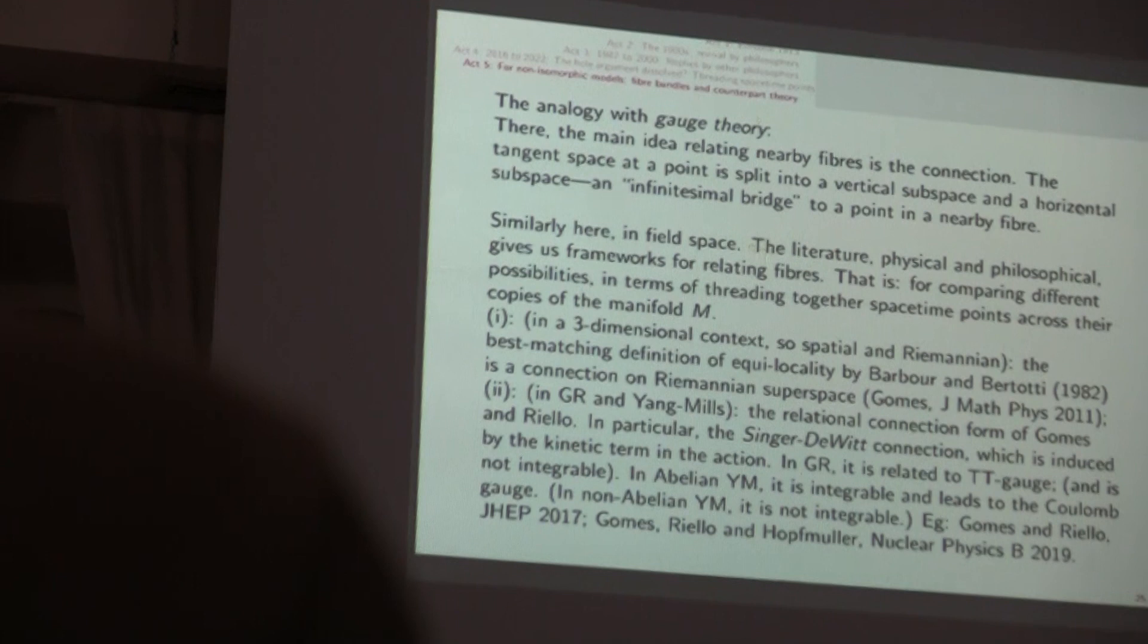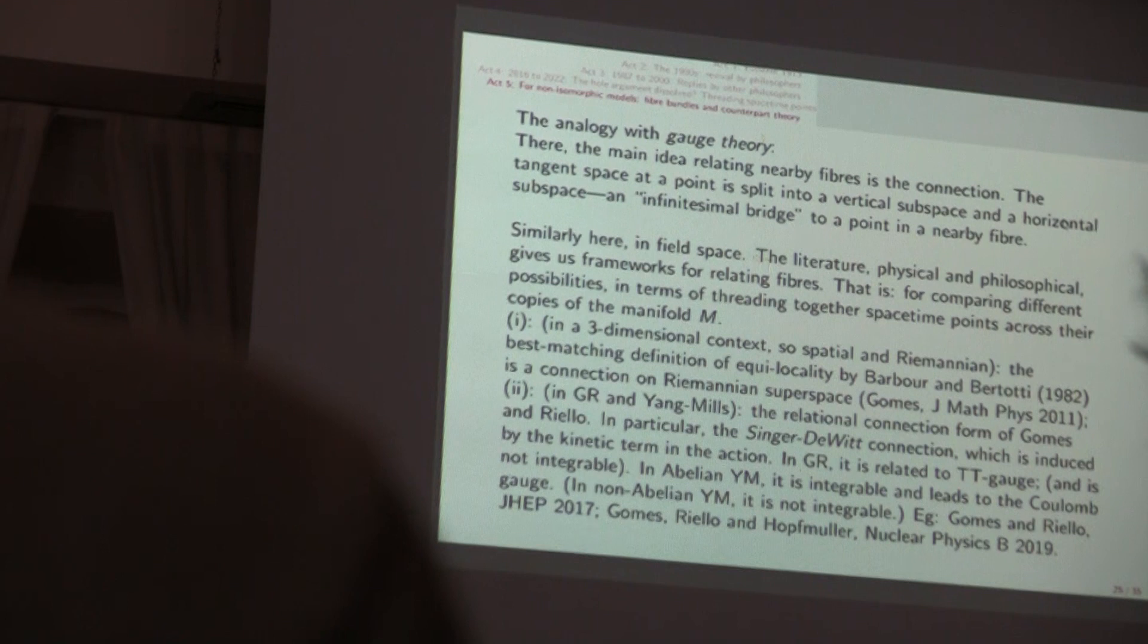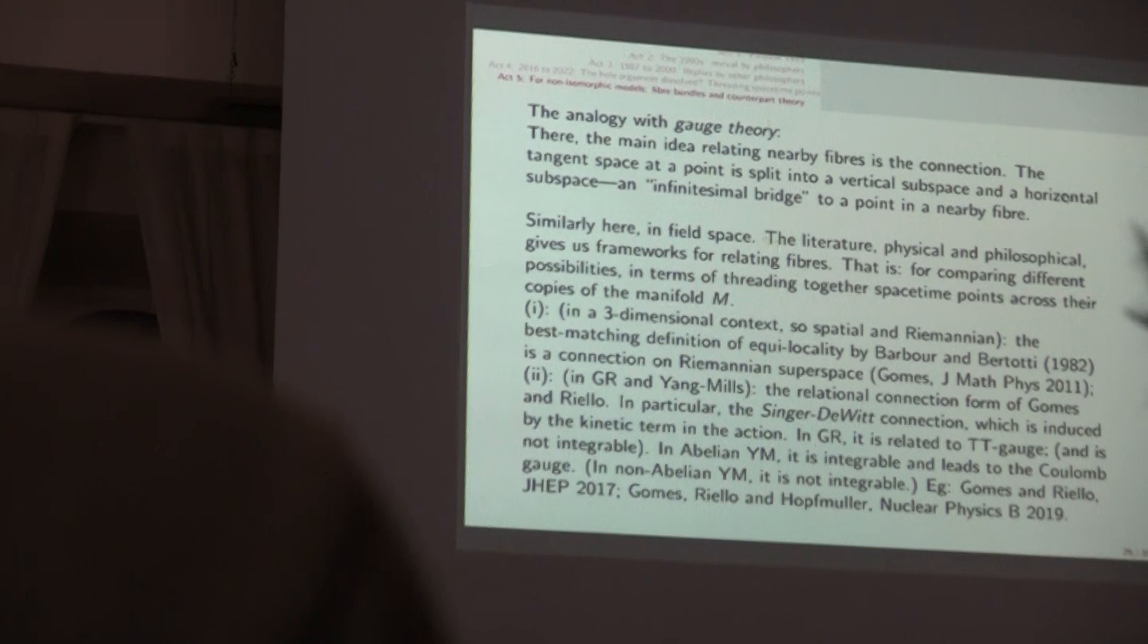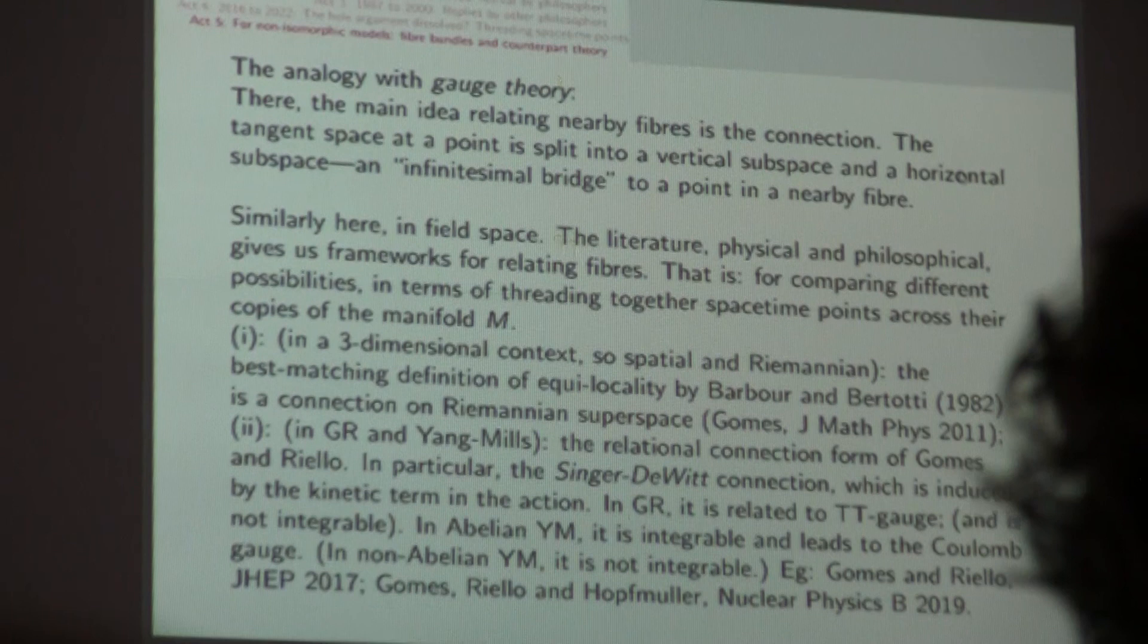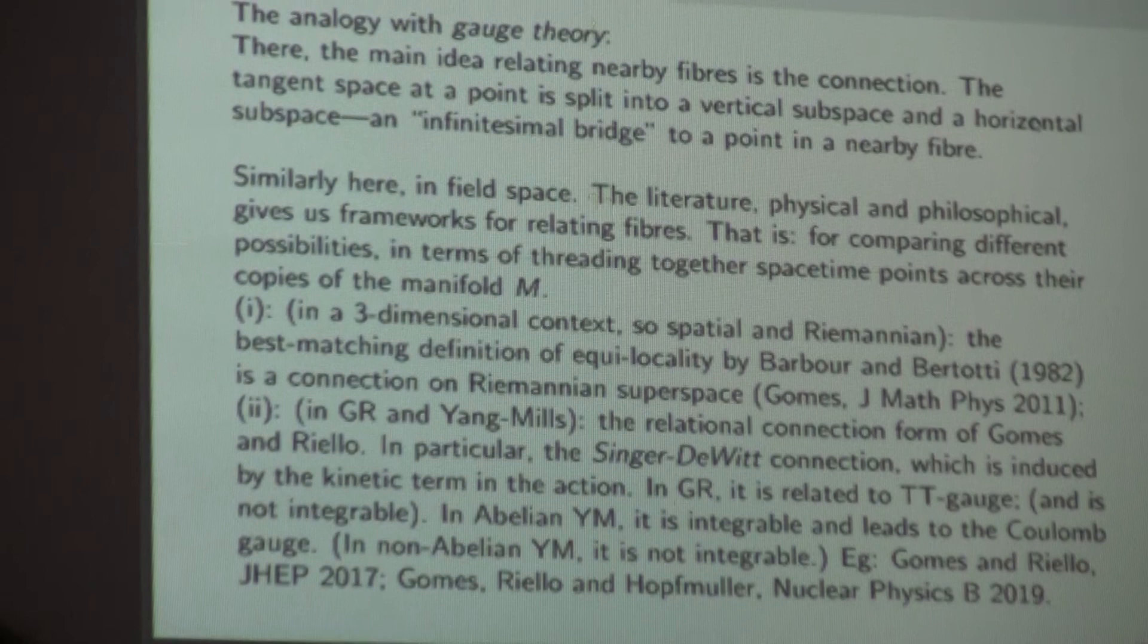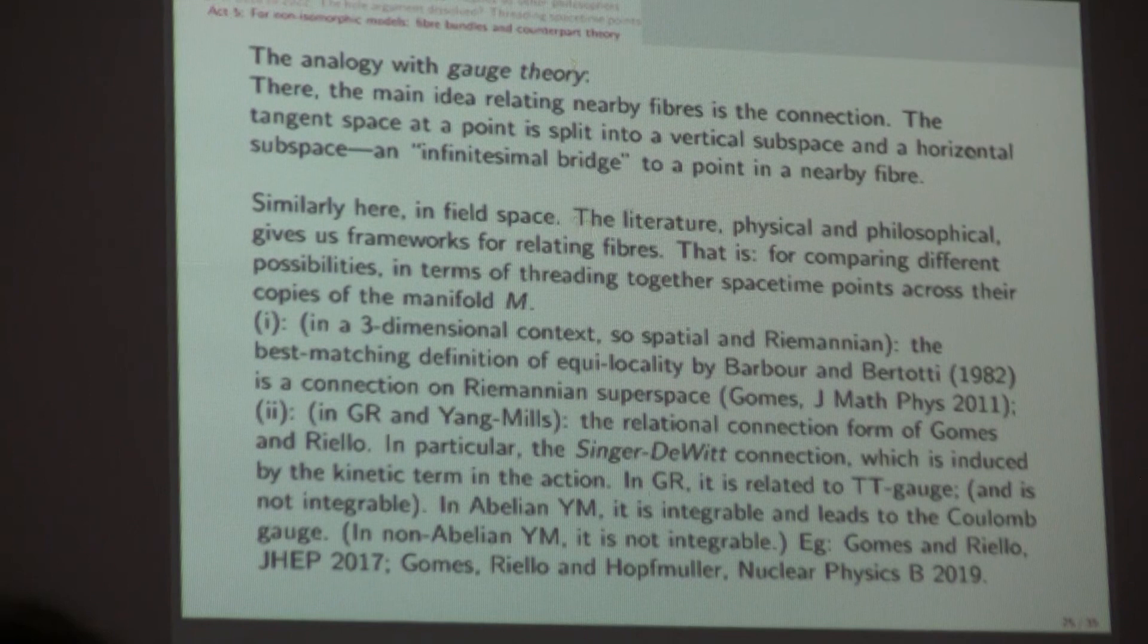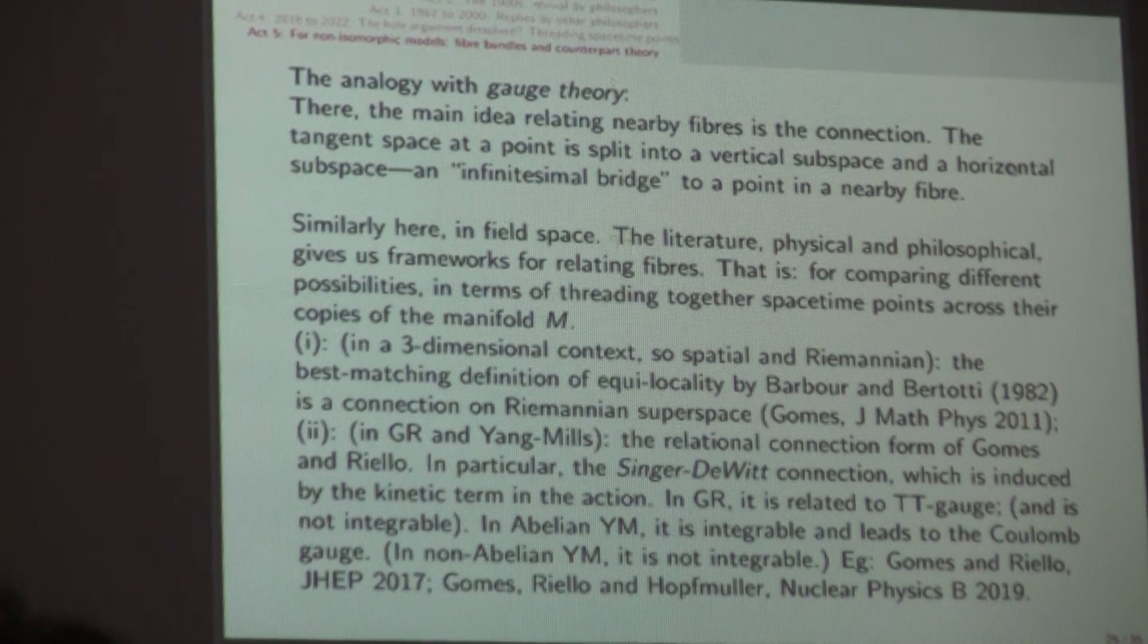So we're going to have a framework for comparing different possibilities, which will involve threading spacetime points across the copies of the manifold M in the two elements of the fiber. Now, in a three-dimensional context, for spatial geometries and Riemannian metrics, as many of you will know, Barbour and Bertotti in 1982 gave a definition, which they called best matchings, later dubbed also equilocality, which Gomes 10-12 years ago realized represents a connection on Riemannian superspace. So there is a straightforward implementation of the connection idea in the Riemannian superspace case.